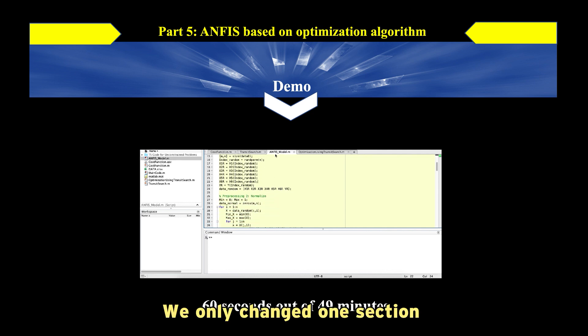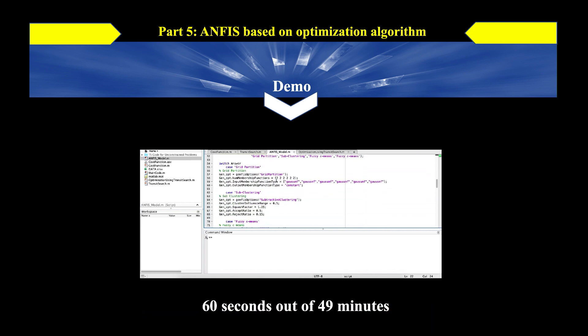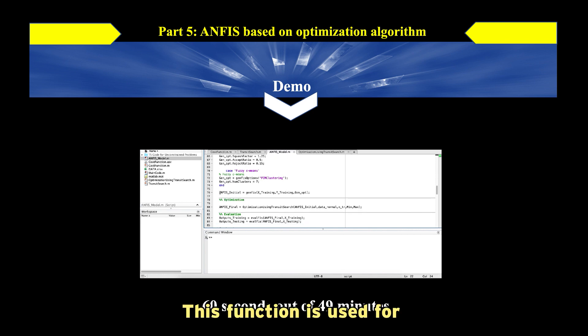We only changed one section of the ANFIS model's main file, which was after the initial model. This function is used for optimization in this field. Optimization using transit search. It also takes training values and we specify the min and max values to allow it to find the best values for the variables in the range.